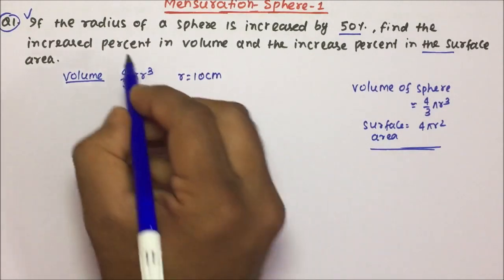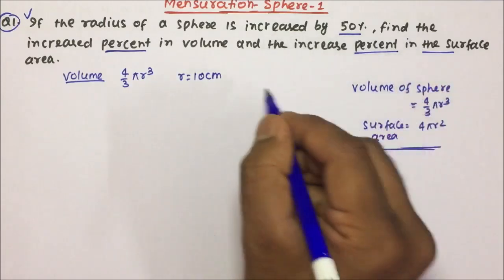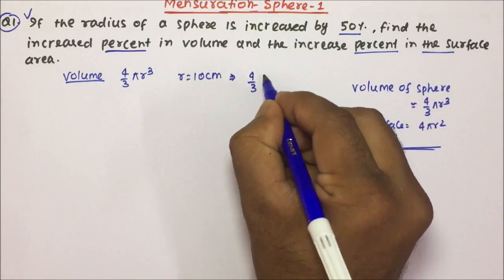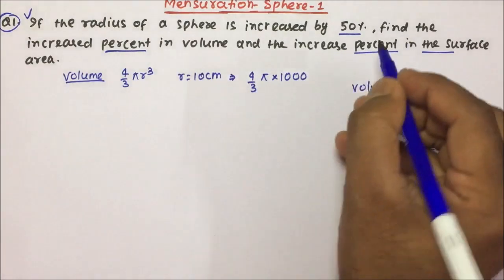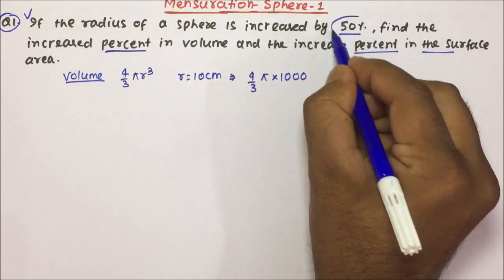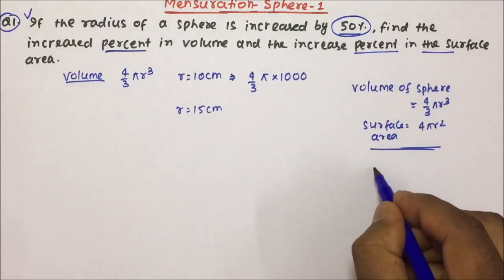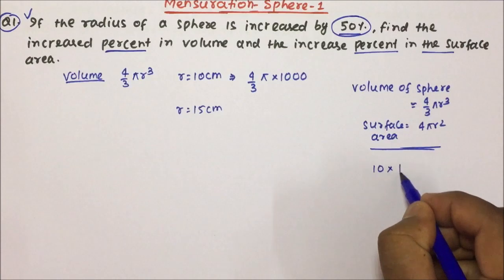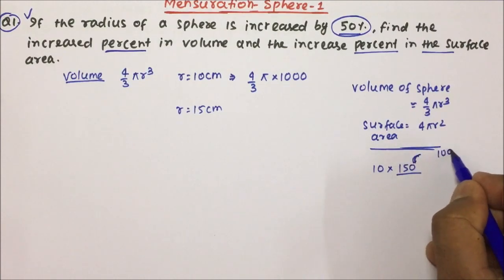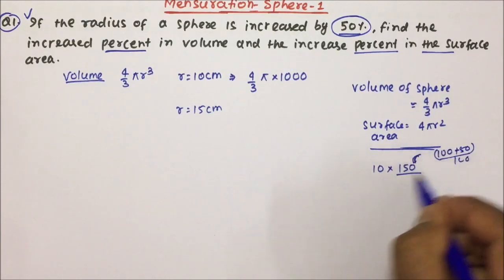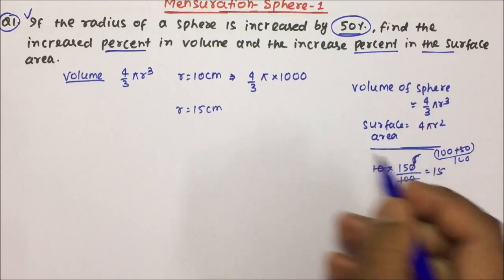Friends, you can assume any value. If they have asked you to calculate percentage, you can assume any value and solve the question. So what will the volume become? Volume is 4/3 π r³ — r³ will become 1000. Now the radius of the sphere has been increased by 50 percent, so it will become 15 centimeters. Earlier it was 10 and it is increased by 50 percent, so add it to 100 and then divide by 100.